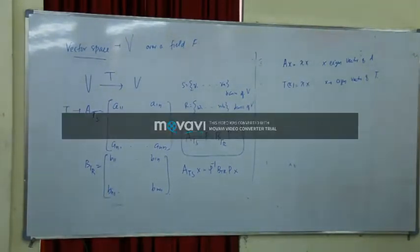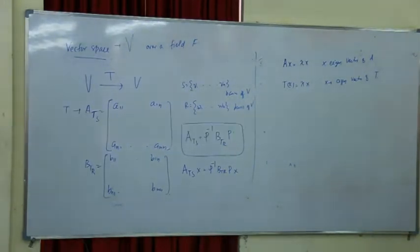If you find the correlation matrix, it is N by N matrix. So you can find N by N matrix and you can use N by N matrix.